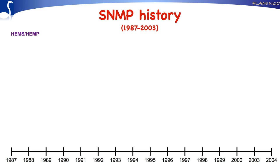One month later, in November 1987, SGMP, the Simple Gateway Monitoring Protocol, appeared. This protocol was slightly changed into SNMP, the Simple Network Management Protocol. Work was also going on a third proposal, which appeared in April 1989 and was called CMOD, Common Management Over TCP.